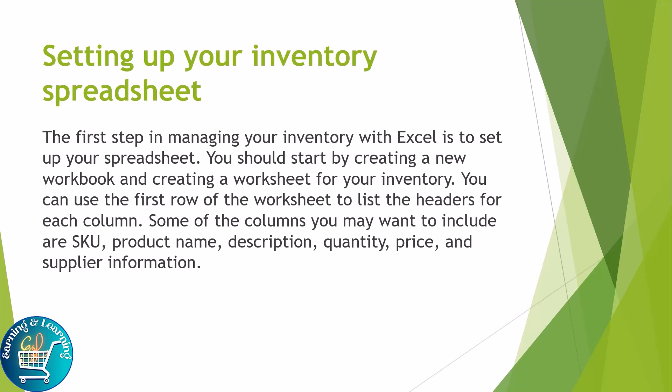You can use the first row of the worksheet to list the headers for each column. Some of the columns you may want to include are SKU, product name, description, quantity, price, and supplier information.